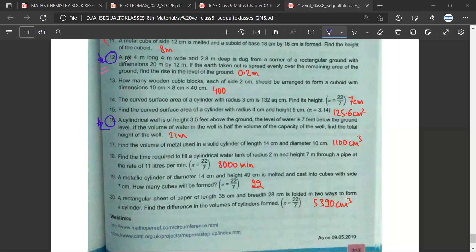So question number 12: A pit four meters long, four meters wide, and 2.8 meters deep is dug from a corner of a rectangular ground. If the earth taken out is spread evenly over the remaining area of the ground, find the rise in the level of the ground. So basically in this question, what is happening is...